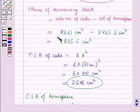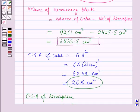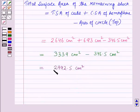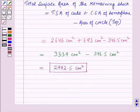So the volume of the remaining block is 6835.5 cm³ and the total surface area of the remaining block is 2992.5 cm². This is the complete solution of the given question. Hope you all enjoyed the session. Thank you.